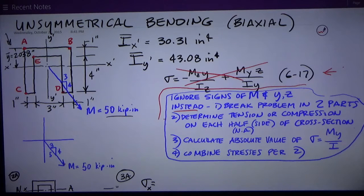Step two, we want to determine whether or not we have tension or compression on each half or side of the cross section of the neutral axis. That takes care of the signs and combines what direction the moment is and what direction the distance is, whether positive or negative from the neutral axis. This is a much more practical approach, much less plug and chug.